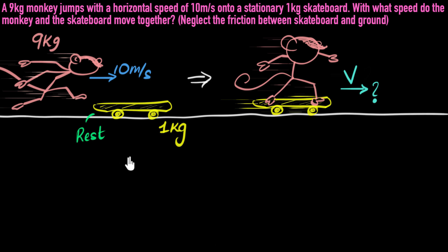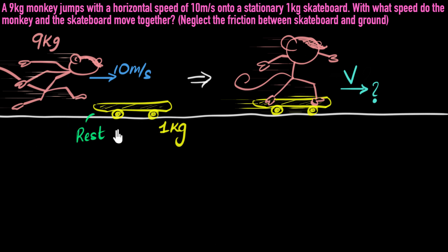So how do we solve this problem? Where do we even start? The most important clue is that this is a problem on collision. And whenever bodies are colliding, their total momentum before collision should always equal their momentum after the collision. And so that's where we can start.